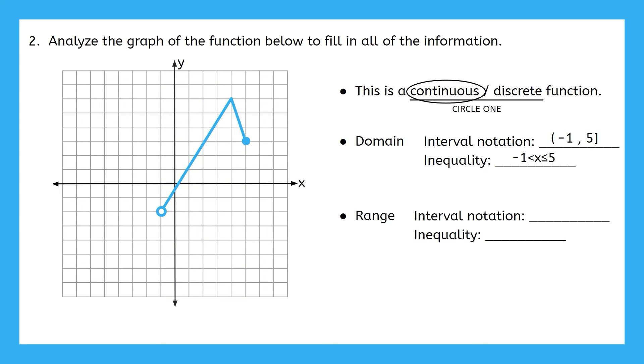As for the range, also known as all of my possible y values of the function, it includes all of these real numbers between negative 2 and 6. And because of our given endpoints, the range does not include negative 2, but it will include 6. Nice work.